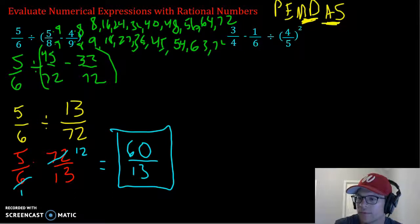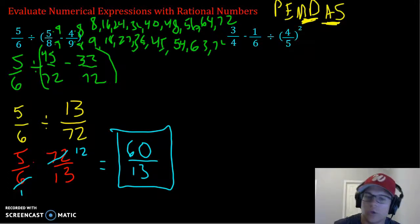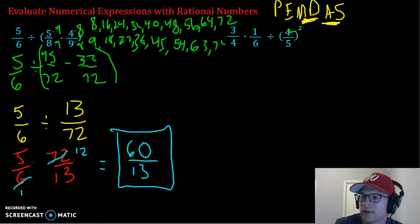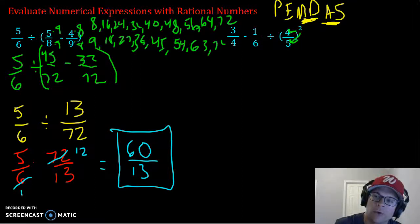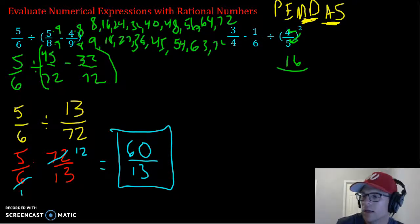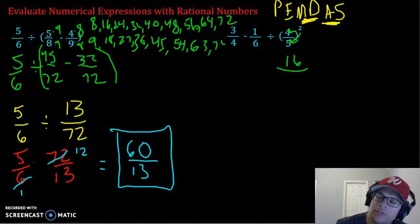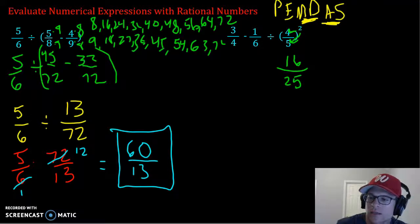So from the second one, we have a set of parentheses, but it's just a fraction, there's nothing we can do, so we move to our exponents. When you have a fraction that is raised to a set of exponents, both the numerator and the denominator get your exponent application. So you're going to take 4 squared or multiply 4 times itself twice. 4 times 4 is 16, and you're going to also do the same thing with your denominator. 5 squared or 5 times itself twice is 25.